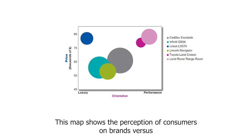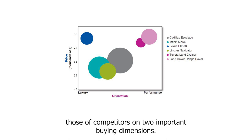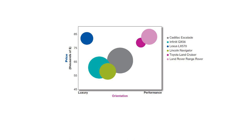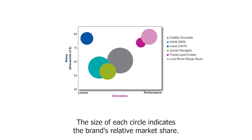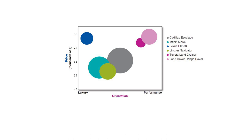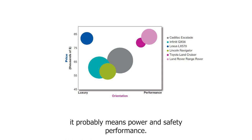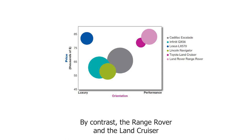Usually, because it is quite hard to design a positioning and differentiation strategy, marketeers use what is called a perceptual positioning map. This map shows the perception of consumers on brands versus those of competitors on two important buying dimensions. In this specific map we look at large luxury SUVs indicating luxury versus performance. The size of each circle indicates the brand's relative market share.